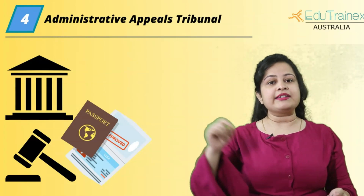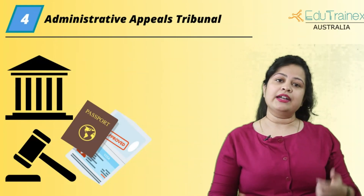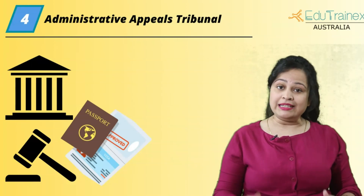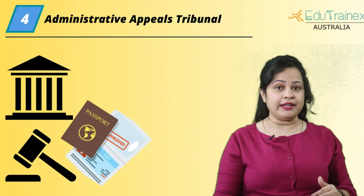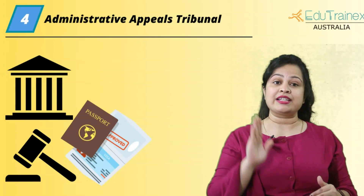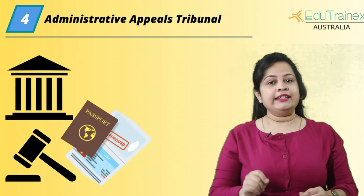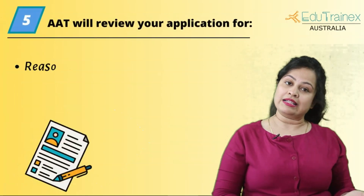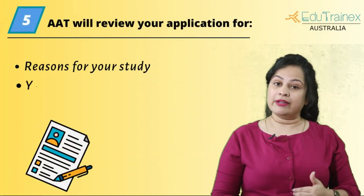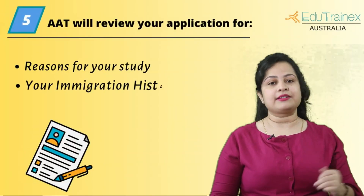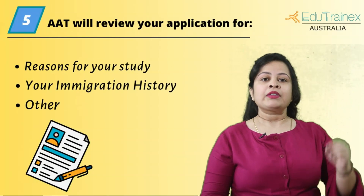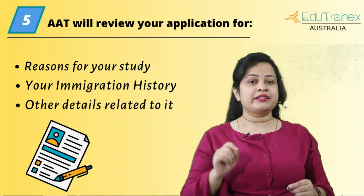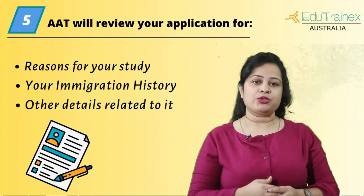The appeal timeframe varies depending on why the visa was rejected and the type of visa. Once you appeal, the AAT will send you a letter confirming they have received your application. The AAT will review your application for reasons for your study, your immigration history, and other related details, then provide a detailed written decision regarding your visa application.